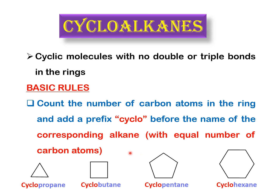The smallest ring we can have is a three-membered ring. The corresponding alkane name is propane, so with the prefix it becomes cyclopropane. For a four-membered ring it becomes cyclobutane, a five-membered ring is cyclopentane, and a six-membered ring is cyclohexane. This is how you assign parent names to cyclic molecules.